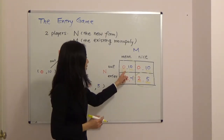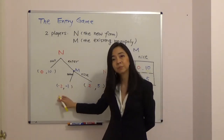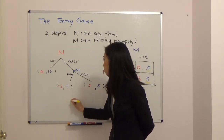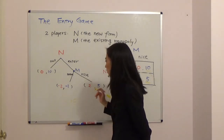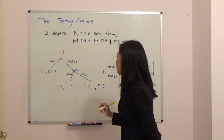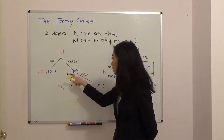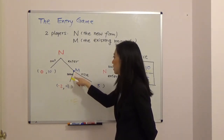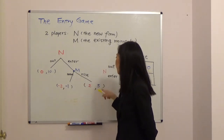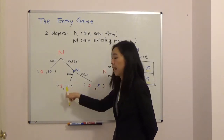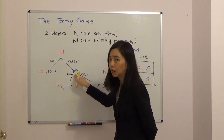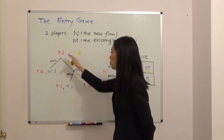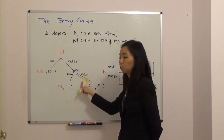Notice that one equilibrium doesn't really make sense. If we solve the sequential game using backward induction, we get a refinement of Nash equilibrium called sub-game perfect equilibrium. Suppose we're already at the node where the new firm has entered — the monopoly sees the new firm already entered. If the monopoly plays mean it suffers a one million dollar loss; if it plays nice it gets five million dollar profit. So five is better than negative one, meaning the monopoly will play nice.